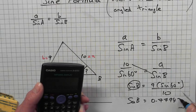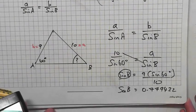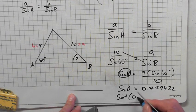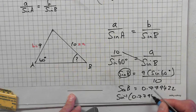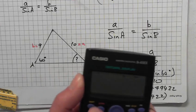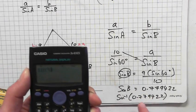Right, so how do you get the angle B? So it's sine inverse 0.779422. So inverse sine and key in the decimal.